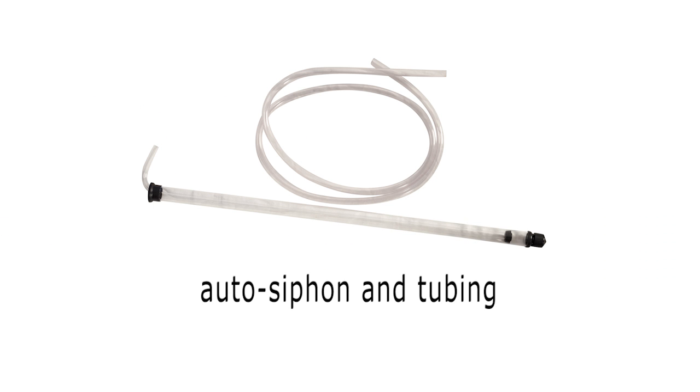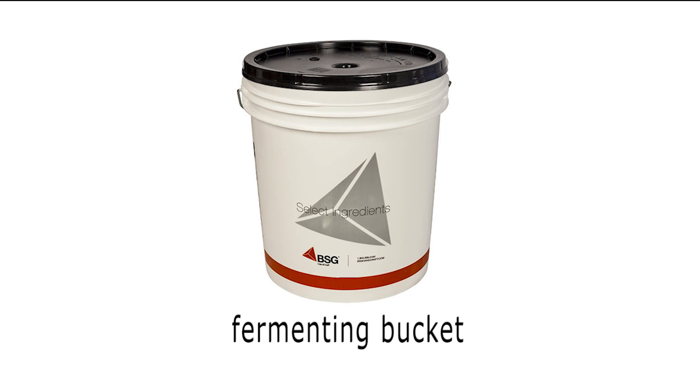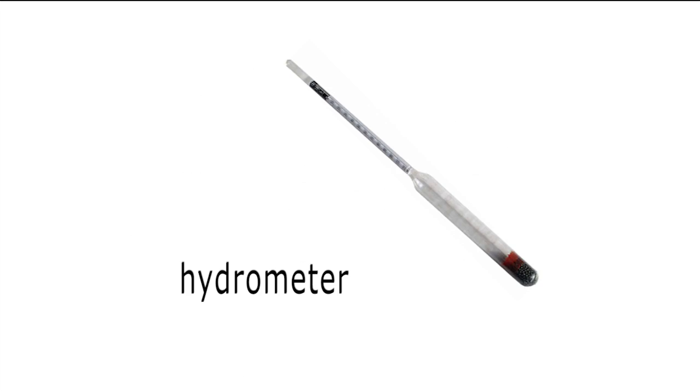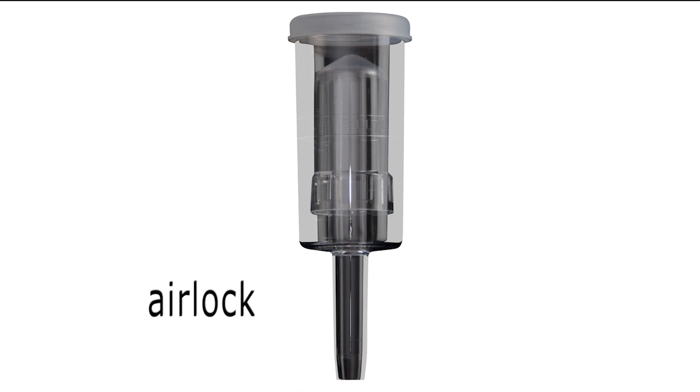Make sure that the bag has a fine mesh construction to reduce the amount of grain that escapes. You'll need an auto-siphon and tubing, a fermenting bucket with lid - make sure that the lid has a hole to allow the release of CO2 gas that will be produced during fermentation - a hydrometer, and an airlock.